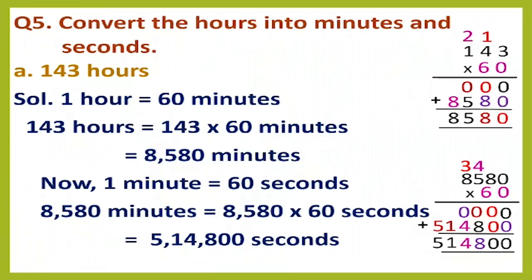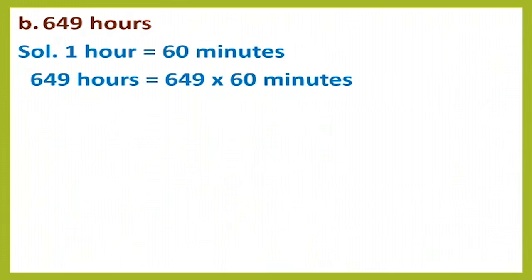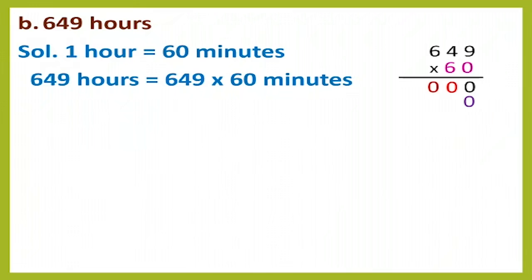Question B is 649 hours — convert into minutes and seconds. One hour equals 60 minutes, so 649 hours = 649 × 60 minutes. First multiply 0 by 649: all zeros. Put 1 zero, then multiply 6 by 649: 6×9=54, write 4 carry 5; 6×4=24 plus 5 is 29, write 9 carry 2; 6×6=36 plus 2 is 38, write 38. Adding gives 38,940 minutes.